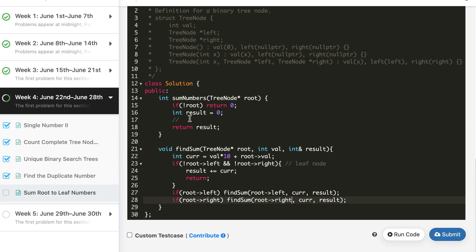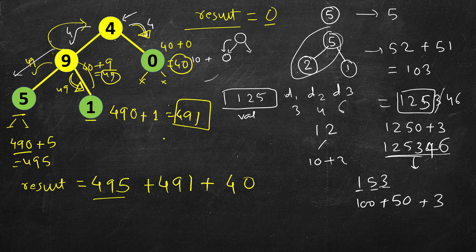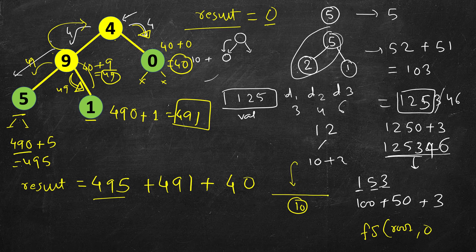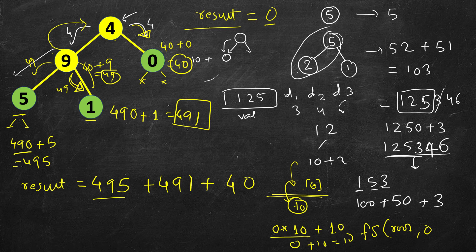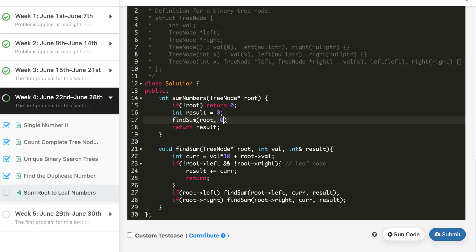We call find_sum on root passing an initial value of 0. Think of it as a hypothetical level above the root with no nodes — so we pass 0. The root multiplies 0 by 10 and adds its own value. For a single node with value 8: 0 * 10 + 8 = 8, and since it's a leaf it returns 8, which is correct. That's why we pass 0 as the initial value. We pass result by reference and then return the final result.